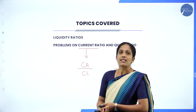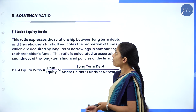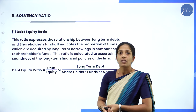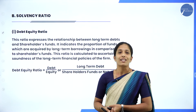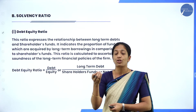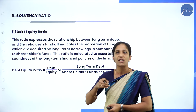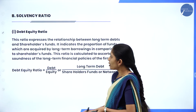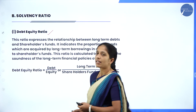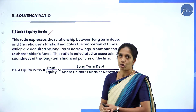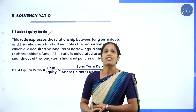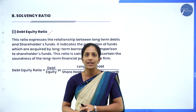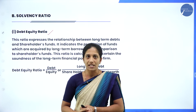In today's session, we shall move on to the next type of ratio, that is solvency ratio. Under solvency ratio, the first ratio is debt equity ratio, where you are going to compare your long term debt with the equity of the business.